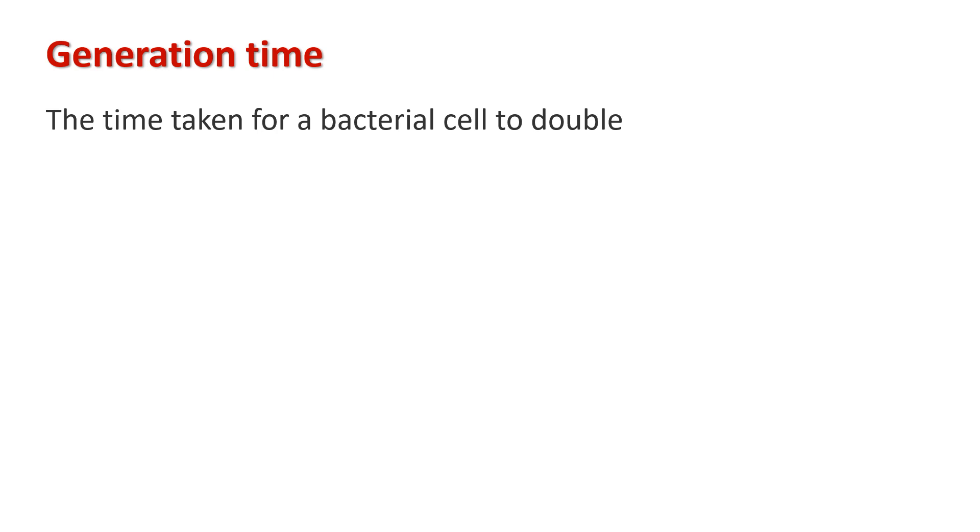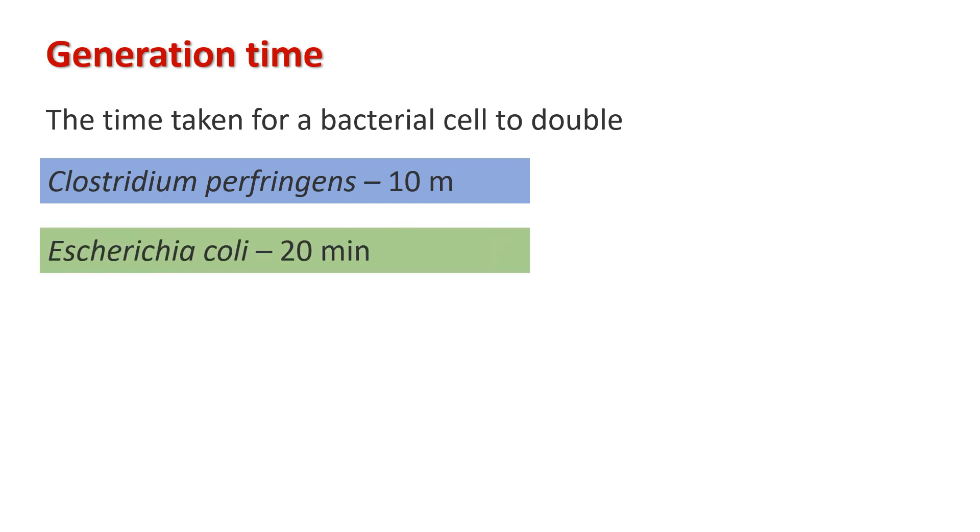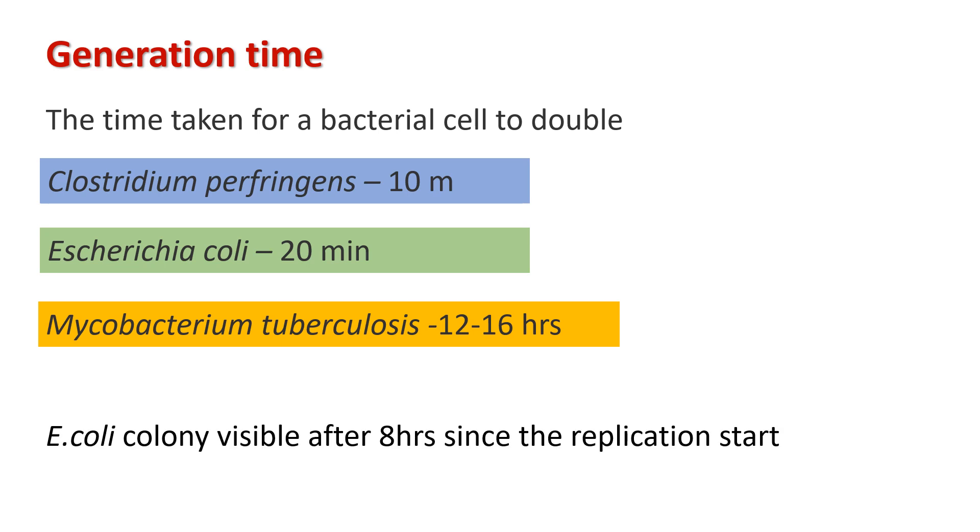The time taken for a bacterial cell to double is called generation time. The generation time varies among different species of bacteria based on the environmental conditions they grow in. For example, Clostridium perfringens is the fastest growing bacteria with a generation time of 10 minutes, while E. coli has a doubling time of 20 minutes. Mycobacterium tuberculosis is one of the slowest growing bacteria, taking about 12 to 16 hours to double. Bacterial division leads to an increase in population size. Eventually, the population becomes large enough to visualize. In the case of E. coli, after eight hours, colonies become visible.